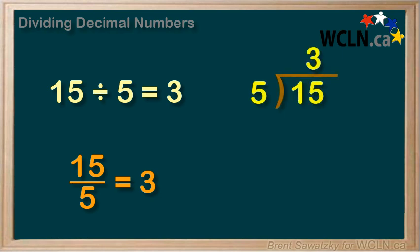15 divided by 5 is 3, or 15 over 5 equals 3.